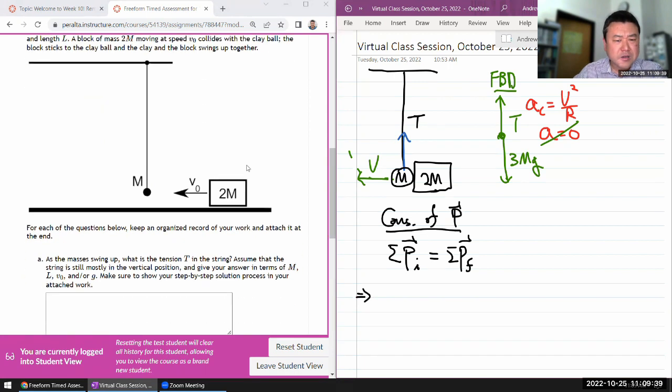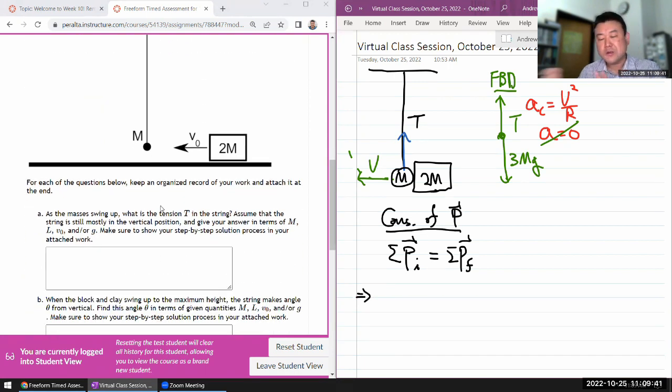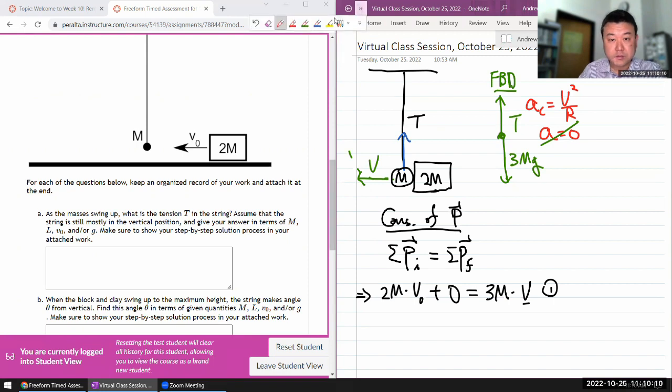So once you get that far, then you should have some sense of what solution steps to go through. So in order to find the tension, what you need is actually this speed. So I need to do the collision analysis first. Whenever you have things colliding, you are thinking through what's conserved. And momentum is almost always conserved.